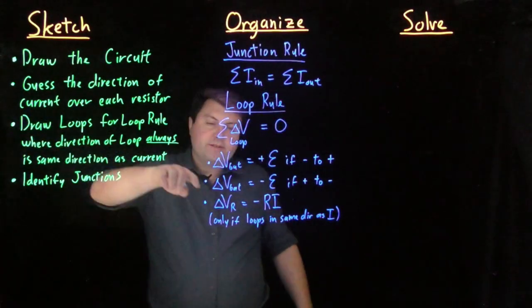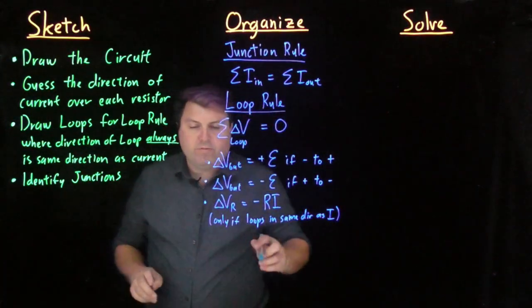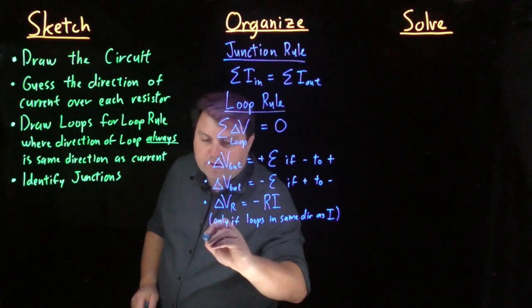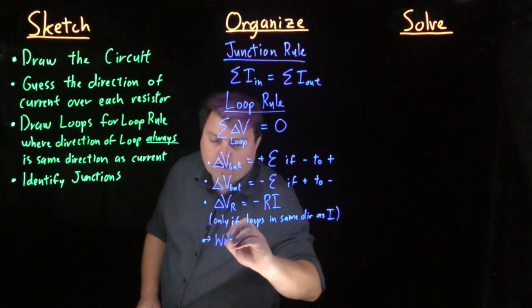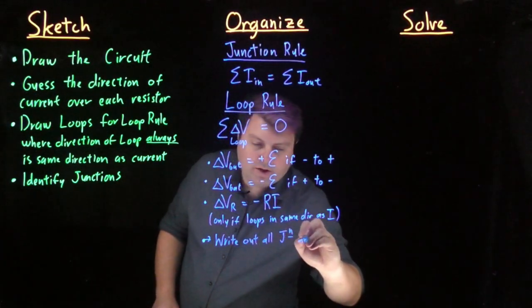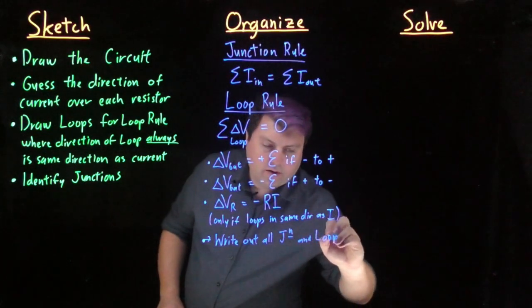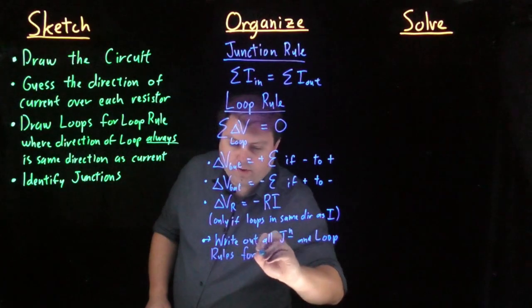So if we don't follow this, then we have to think of what's going on with pluses and minuses, which we don't want. And so what we're going to do is then write out all the junction and loop rules for the circuit.